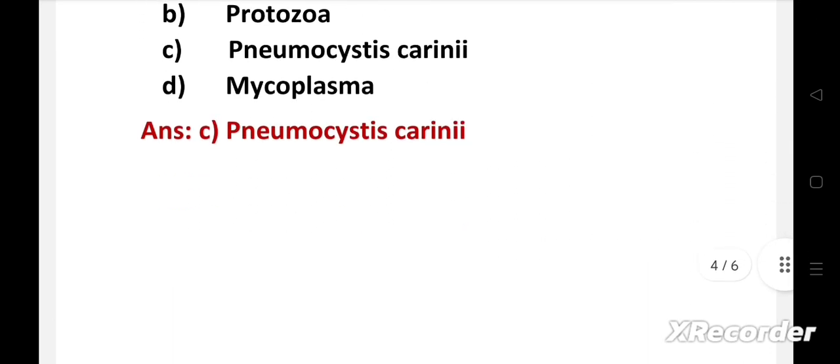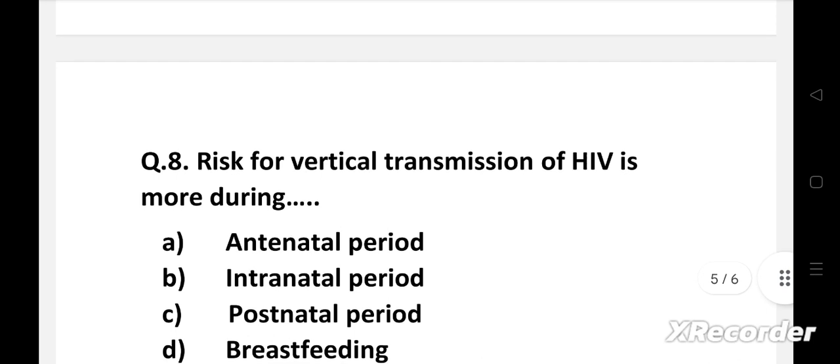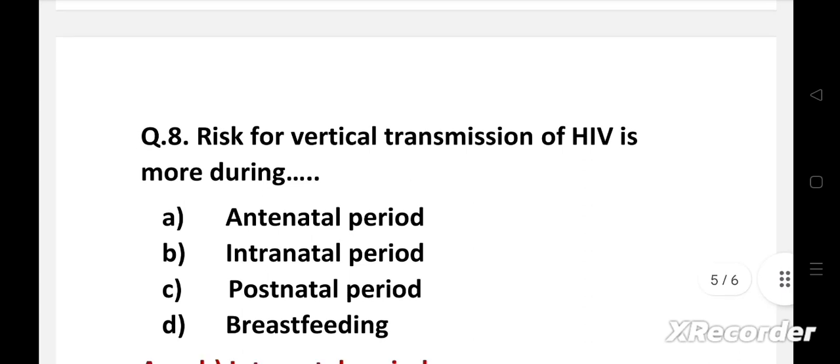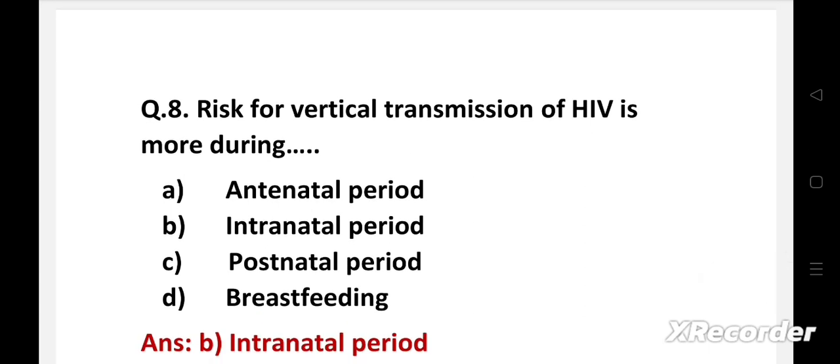Next question. Risk for vertical transmission of HIV is more during: option A antenatal period, B intranatal period, C postnatal period, D breastfeeding. Right answer is option B, intranatal period. Vertical transmission occurs during intranatal period due to exposure to secretions and blood.